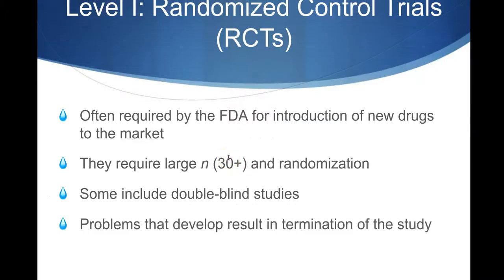The other kind of level one study is a randomized control trial. These are often required by the FDA for introduction of new drugs to the market. They usually require large N, but as long as you have over eight people in each group, it can still count as a randomized control trial. Some of these include a double-blind study, where the patient doesn't know if they're getting the drug or a placebo, and the doctor doesn't know either. You start with a small number of participants, and if there's any problem, you can terminate the study before moving to larger groups.